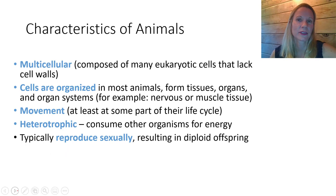Most animals reproduce sexually, where diploid offspring are the result of sexual reproduction. Some animals reproduce asexually, meaning that they can clone themselves, and many animals can regenerate. You can cut the arm off of a starfish, and the starfish will regenerate that arm. In some species of worms, you can cut off their head, and that worm will not only regenerate its head, but it will regenerate a new body from the severed head.